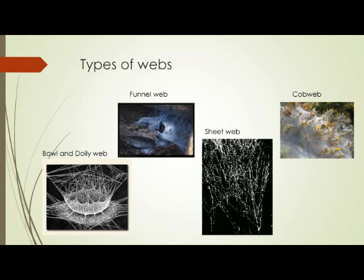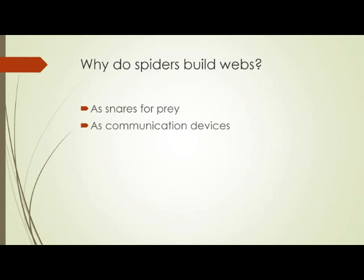For example, purse-web spiders actually bite their prey through the silk of the funnels. But why do spiders build webs? The primary function is to capture prey.